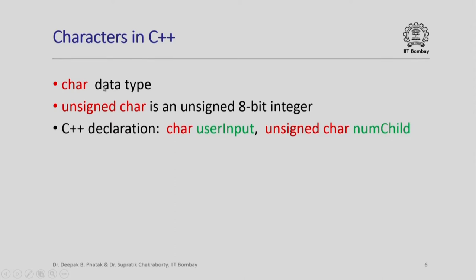How do you declare char or unsigned char in C++? This is the usual way we declare variables — we put the type declaration, in this case char, followed by the variable name; or we can say unsigned char followed by the variable name. An unsigned char is really an unsigned 8-bit integer and you can even do integer operations with it like addition or multiplication.